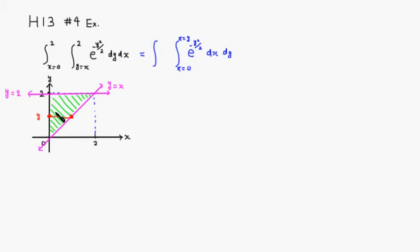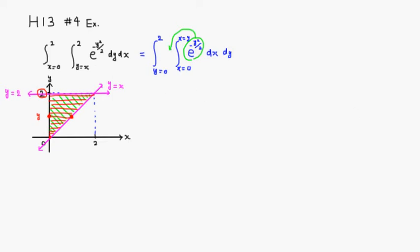To sweep the whole triangular region, y is going to start from 0 and increase all the way up to 2. So y goes from 0 to 2. After that, we just evaluate. Since e to the negative y squared over 2 has nothing to do with x, we can move it outside the inner integral.